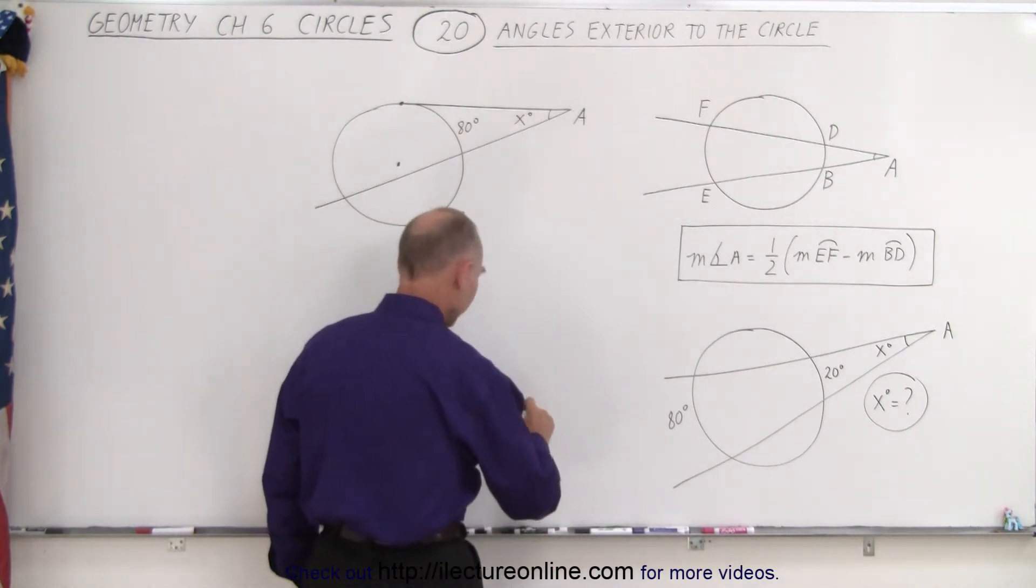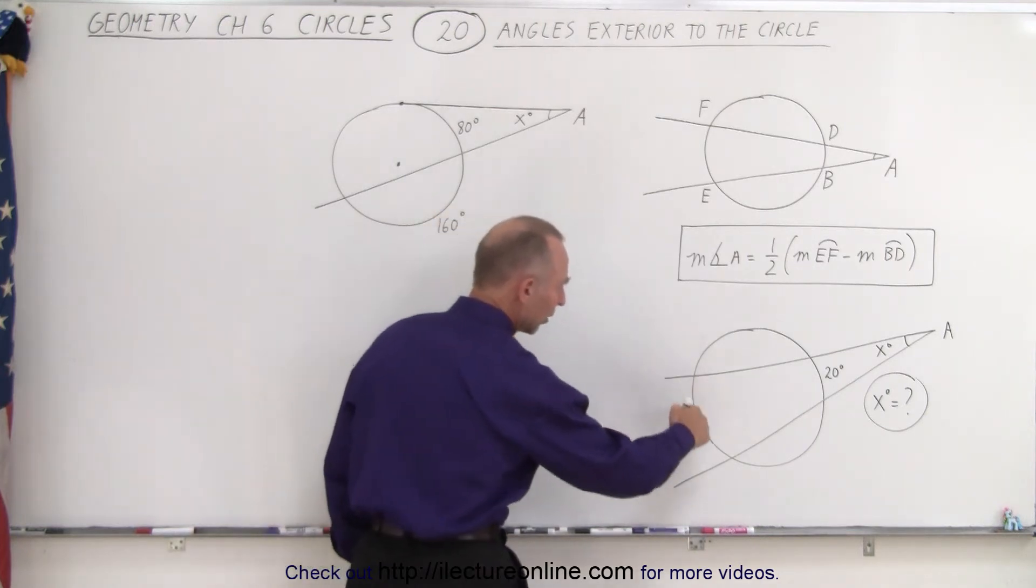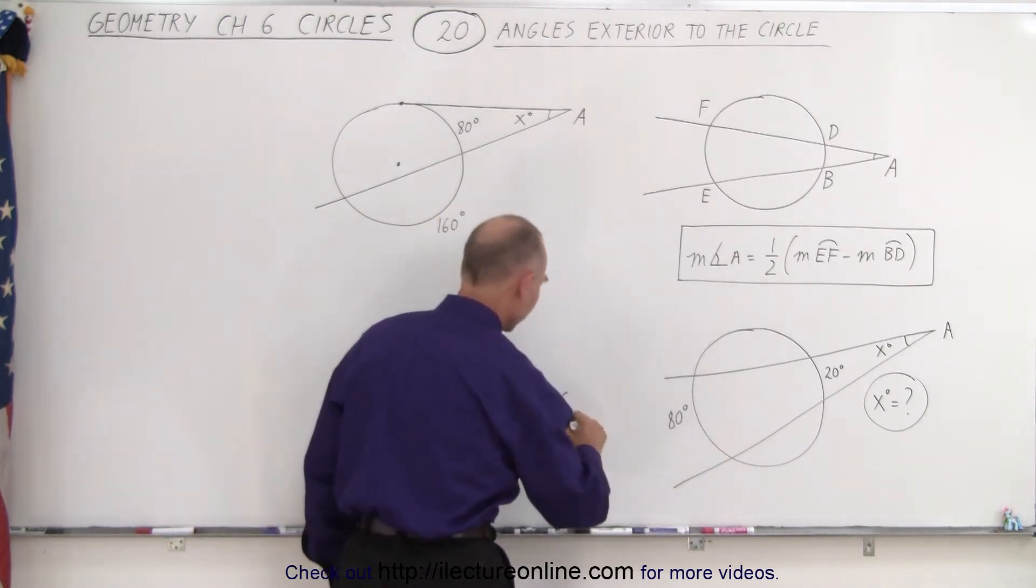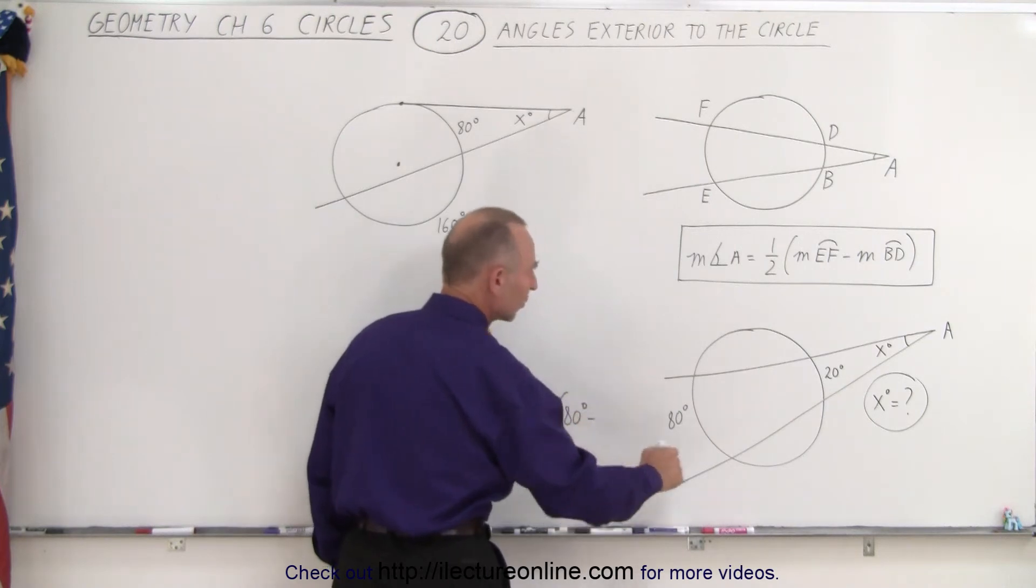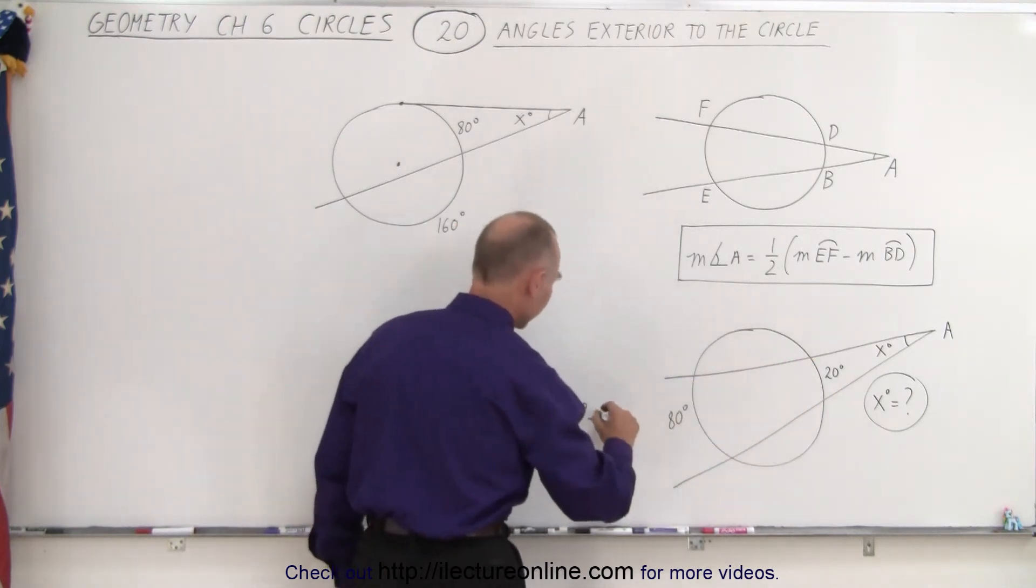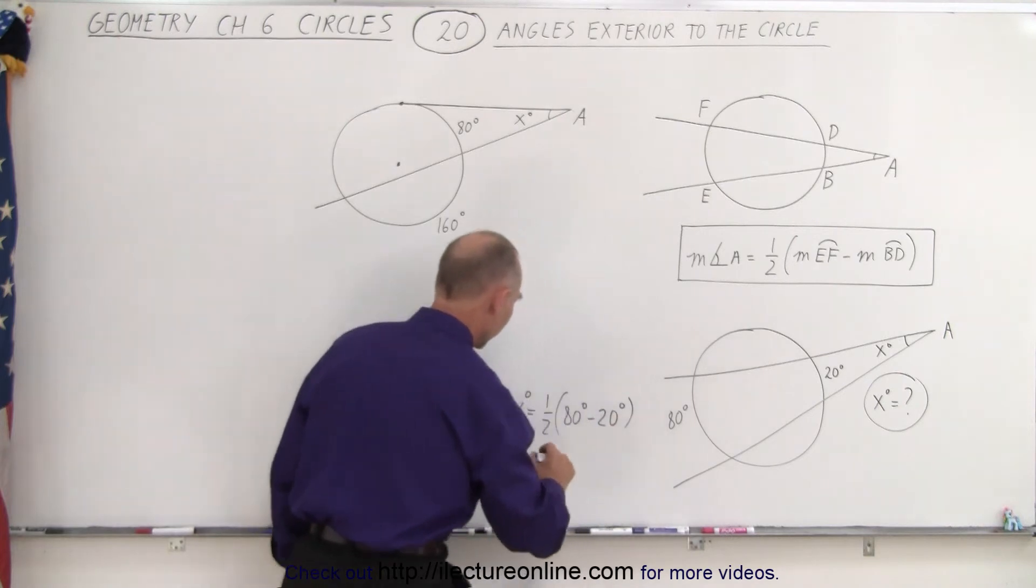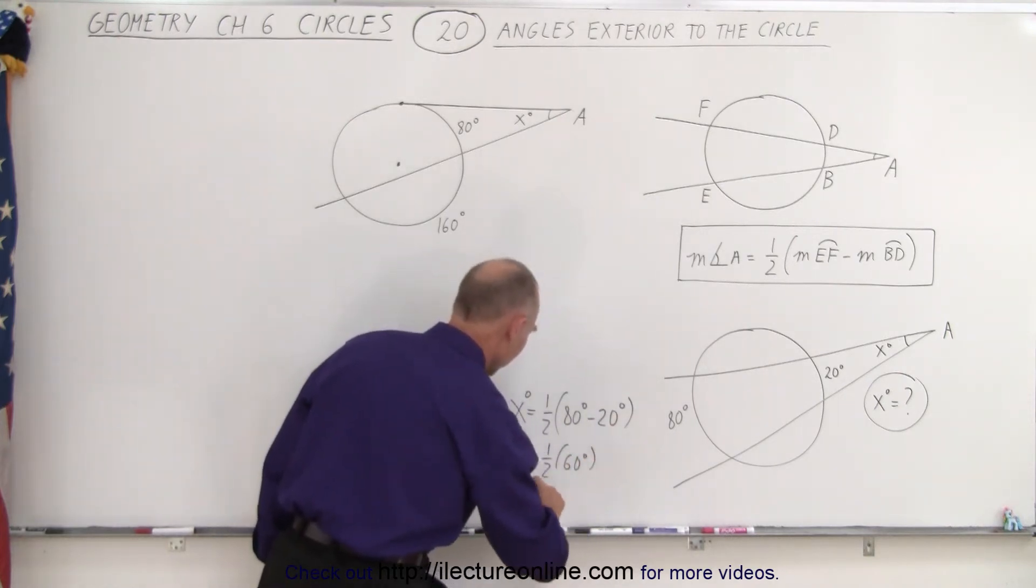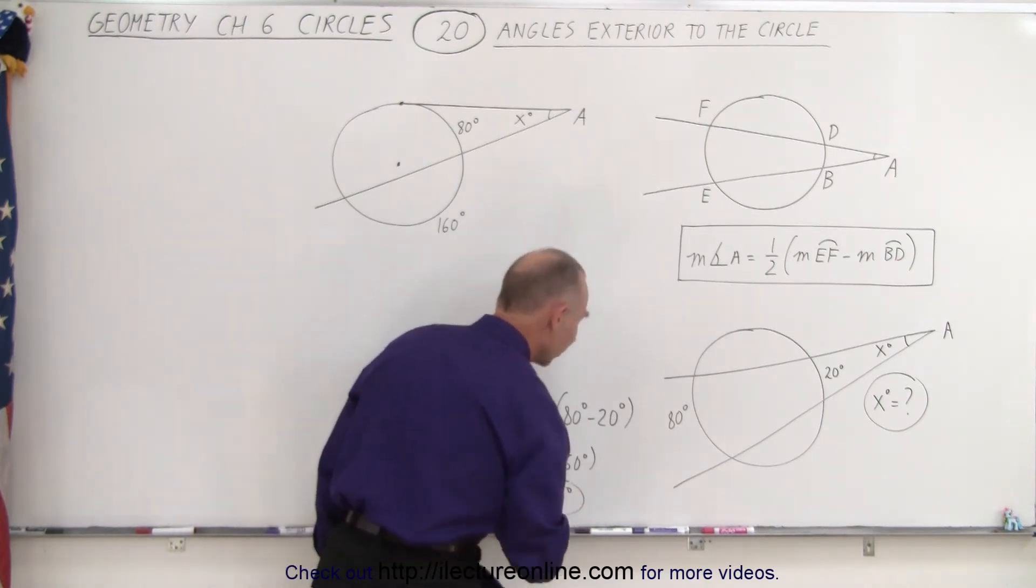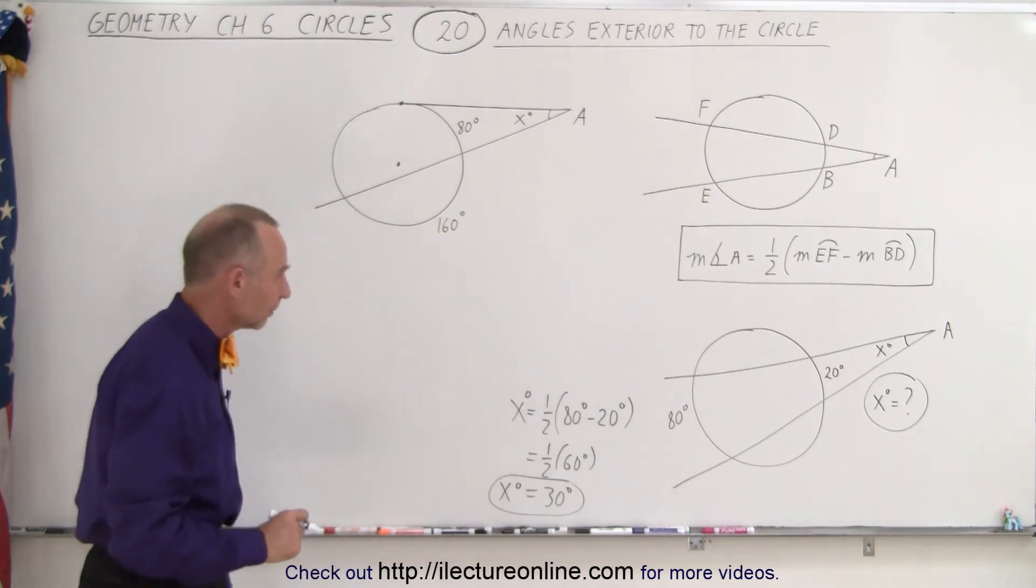To find the value for x, we can say that x degrees equals one half times the measure of the arc on the far side, which is 80 degrees, minus the measure of the arc on the closed side, which is 20 degrees. This equals one half times 60 degrees, which equals 30 degrees. So that is the measure of the angle outside the circle.